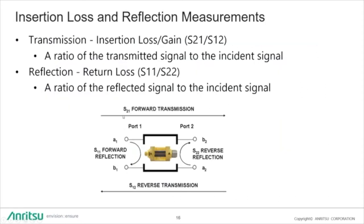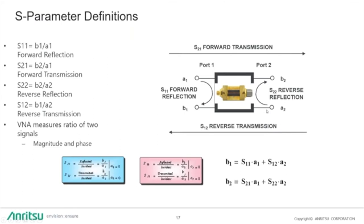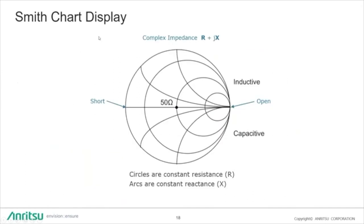As a refresher on S-parameters: S21 is forward transmission, S12 is reverse transmission, S11 is forward reflection, and S22 is reverse reflection. You can look at the mathematical definitions to understand how the VNA computes those ratios. The Smith chart is very important for measuring S11 — we're always looking for a match in the center of the Smith chart at the antenna's operating frequency range.